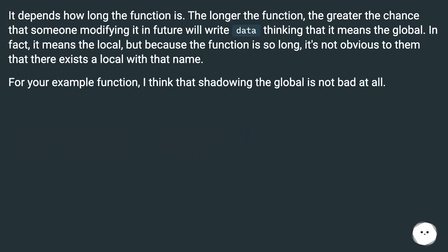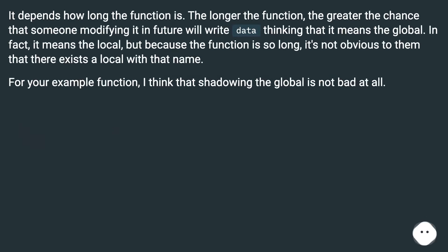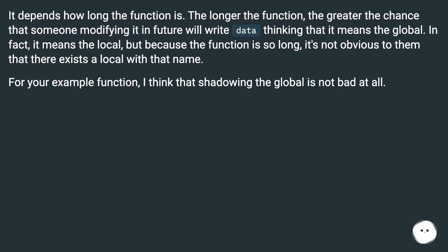It depends on how long the function is. The longer the function, the greater the chance that someone modifying it in the future will write 'data' thinking that it means the global. In fact it means the local, but because the function is so long it's not obvious to them that there exists a local with that name. For your example function, shadowing the global is not bad at all.